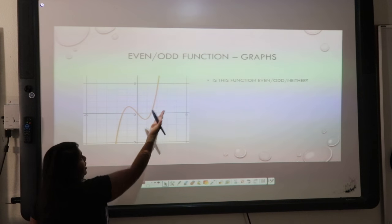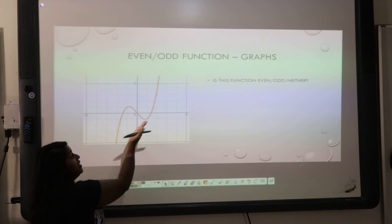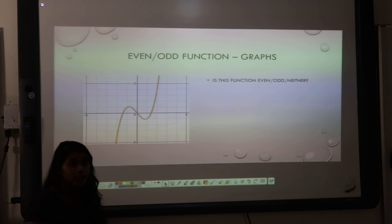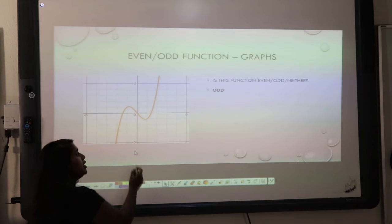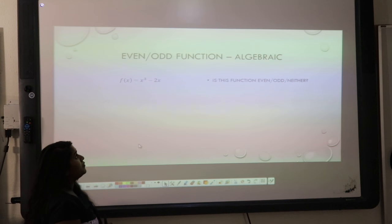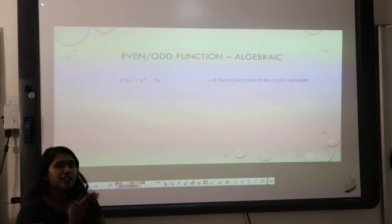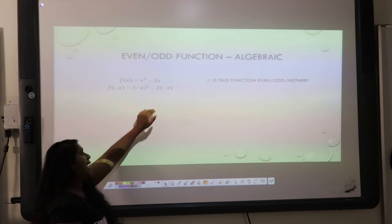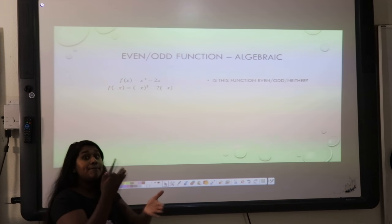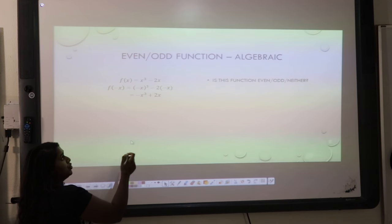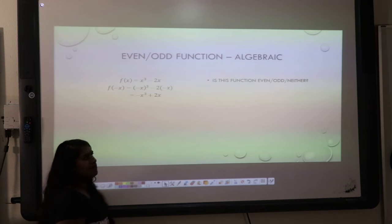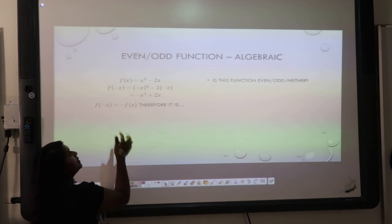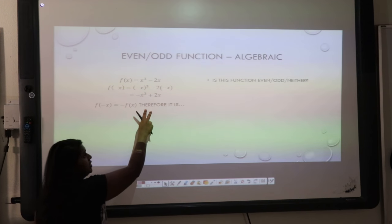Is this function even, odd, or neither? Does it have y-axis symmetry? No, it's not going to do that. If I rotate this 180 degrees, is this hump going to turn into that one and this one going to turn into this one? Absolutely — that means it is an odd function. But let's test that algebraically. My original function is x cubed minus 2x. I place my x's in parentheses and make them negative. What happens when negative x is cubed? It's going to stay negative. What happens with negative 2 times negative x? That's going to become positive 2x. So that becomes negative x cubed plus 2x. If I compare it — is it the original? No, so it can't be even. Is it the exact opposite? Positive becomes negative, negative becomes positive — yes, it is. That means f of negative x is equal to the negative function, so it must be odd.